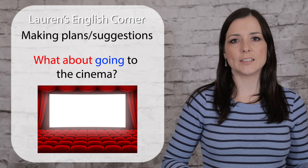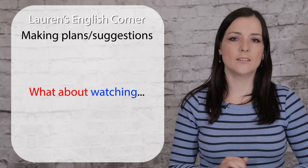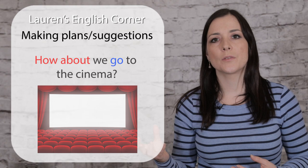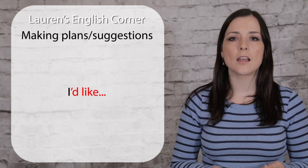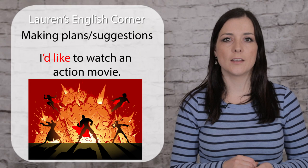You could also say "how about?" — for example, "how about we go to the cinema?" or "how about listening to some music?" Another example from the listening was "I'd like" — "I would like" — for example, "I'd like to watch an action movie." Or if you want to put more emphasis, "I'd really like to" — "I'd really like to see Black Panther."